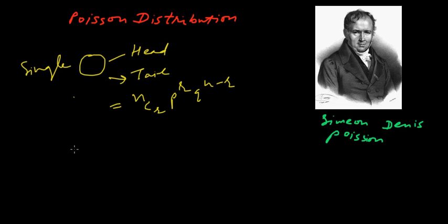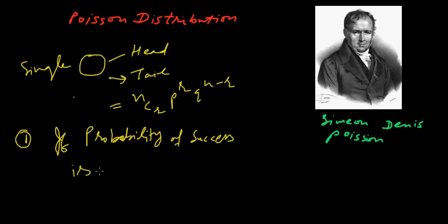But when there are lots of trials and the probability of success is very small, if probability of success is small and number of trials are unlimited or infinite, at that time we will use the Poisson distribution.